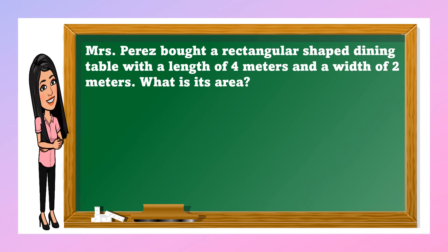So let us analyze and answer this problem. Mrs. Perris bought a rectangular shaped dining table with a length of 4 meters and a width of 2 meters. What is its area? Okay, so what is asked? The area of the dining table.